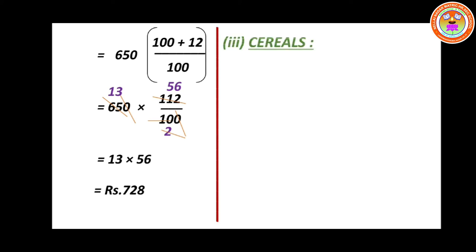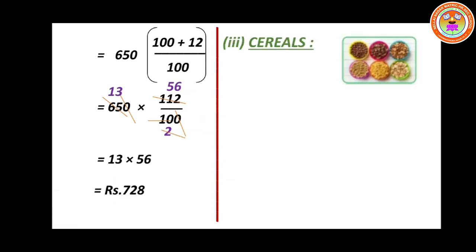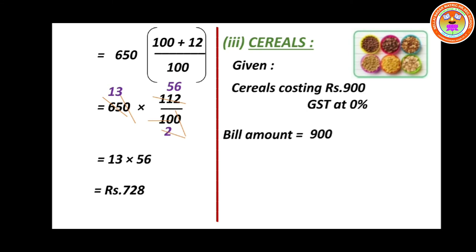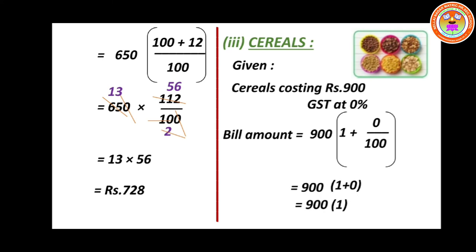Next, cereals. For cereals the GST is 0%, so you only pay the cost amount. Substituting in the formula: bill amount equals 900 into (1 plus 0 divided by 100), which equals 900 into 1. Your answer is Rs.900. So Rs.900 is the bill amount for cereals.